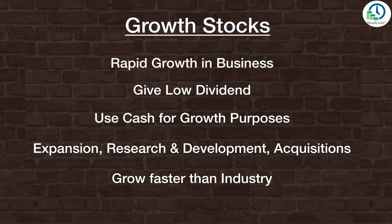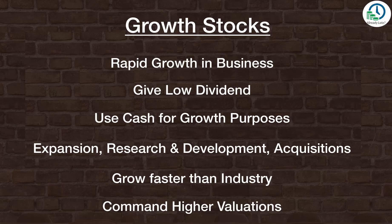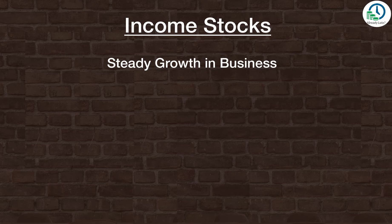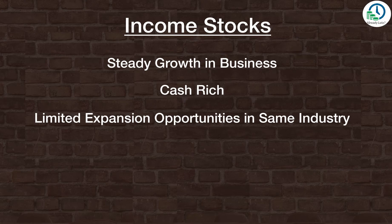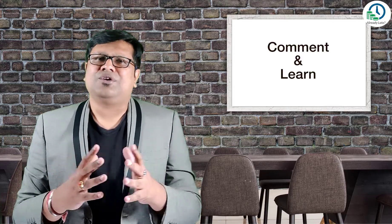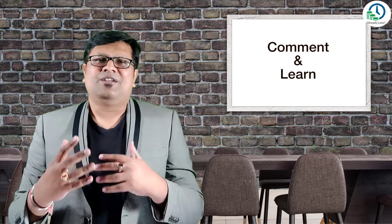Growth companies grow faster than the industry average, and investors tend to reward these companies with higher valuations because they expect future growth to continue. On the other side, income stocks are also growing but the growth is steady. These companies are usually cash rich with limited investment opportunities for expansion, so they may see low price appreciation but usually compensate with higher dividends.